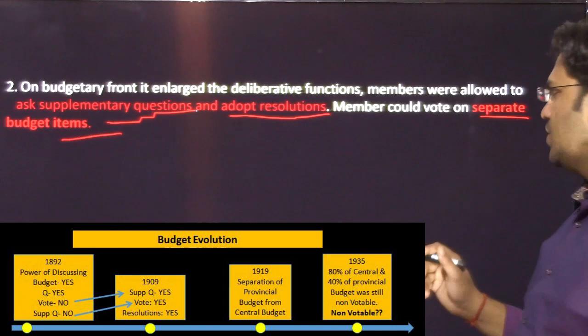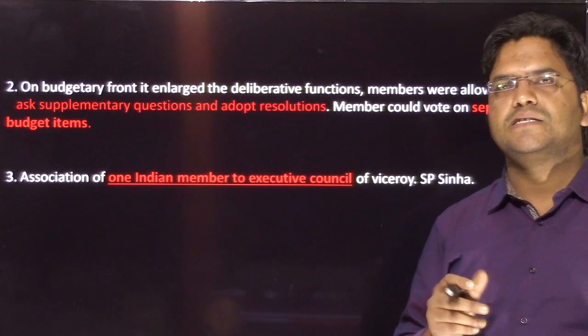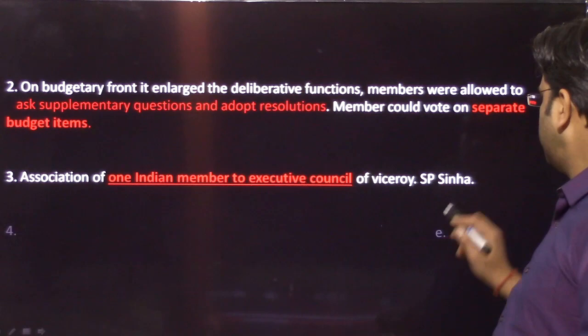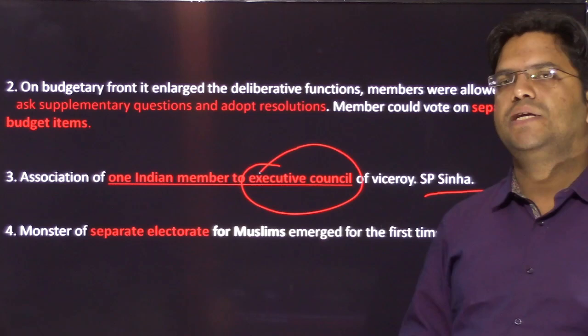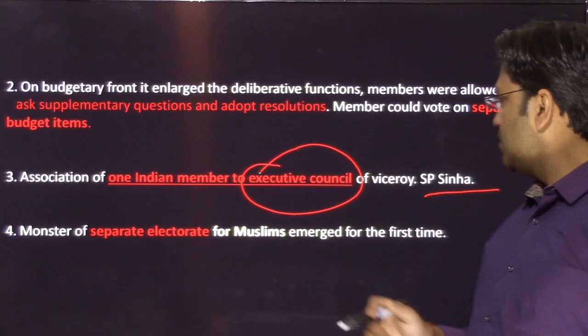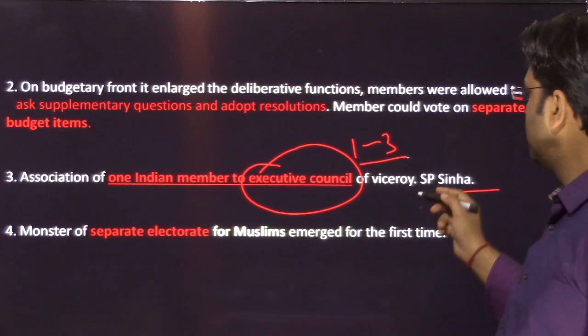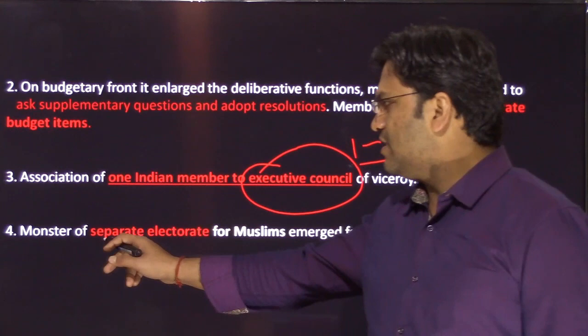The third provision: association of one Indian member to the Viceroy's executive council. In 1861 and 1892, legislative reforms were made but nothing was done for the executive council. Here, S.P. Sinha — an Indian — is being included into the executive council for the first time. The executive council had three members, so one out of three is now Indian. In the 1919 Act, this number will be increased and three Indians will be included out of a larger council.